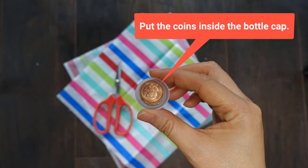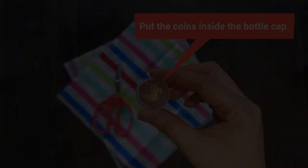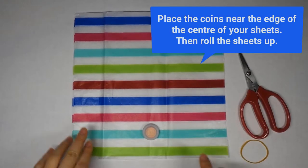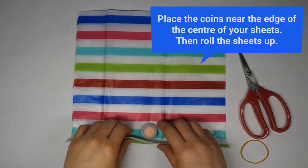Put the coins inside the bottle cap. Place the coins near the edge of the center of your sheets. Then roll the sheets up.